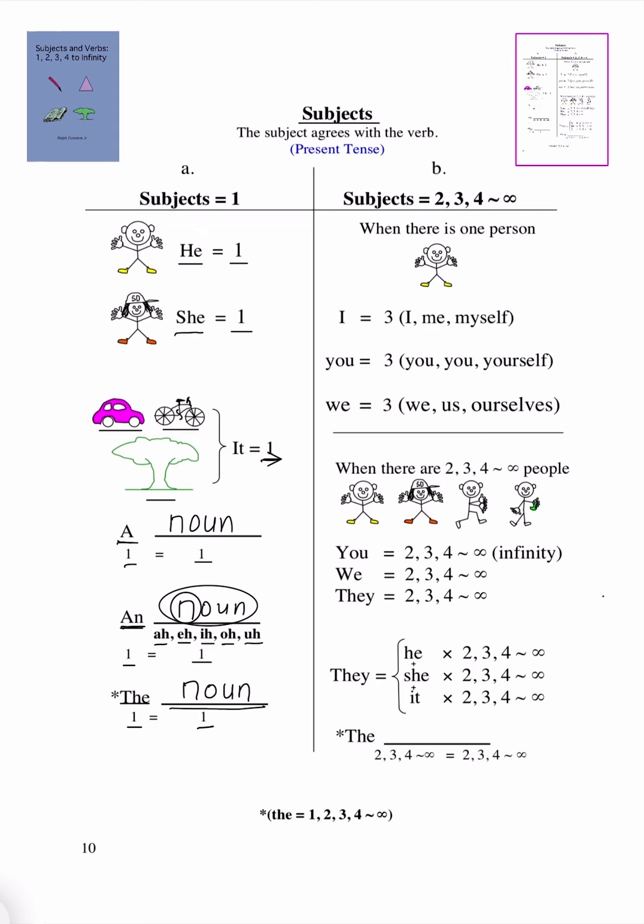So next, let's talk about subjects that are equal to 2, 3, 4 to infinity. Now, here, when there is one person, it's going to be I.